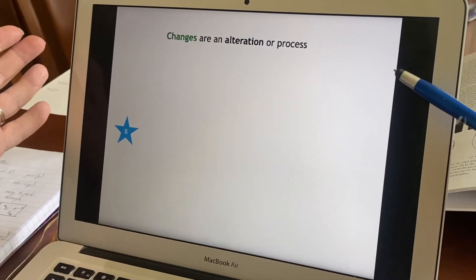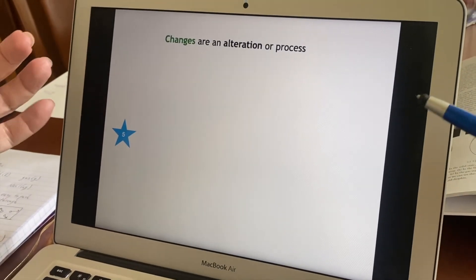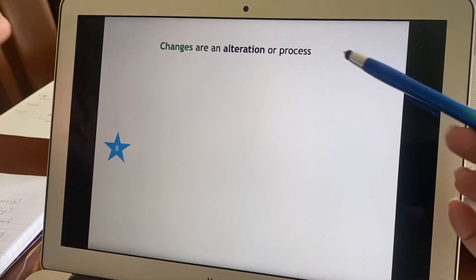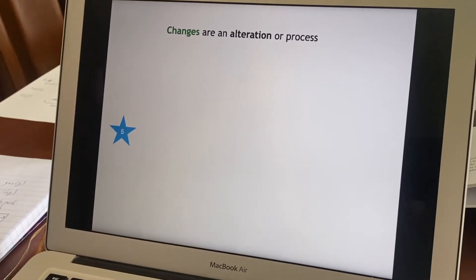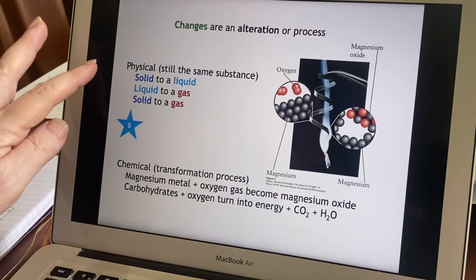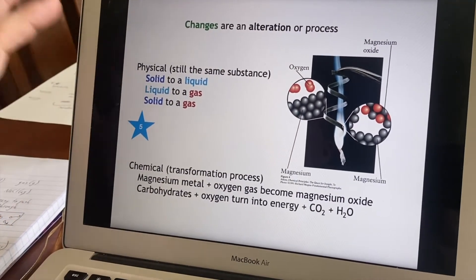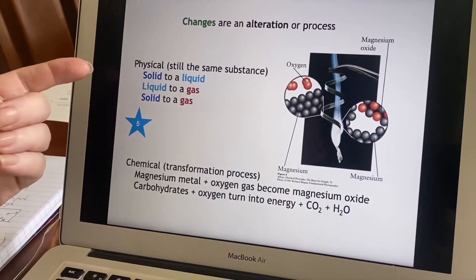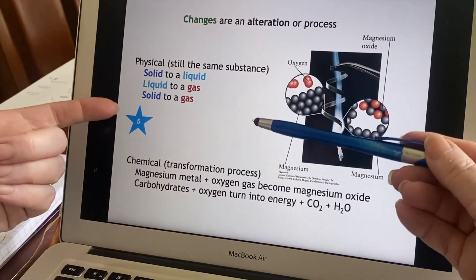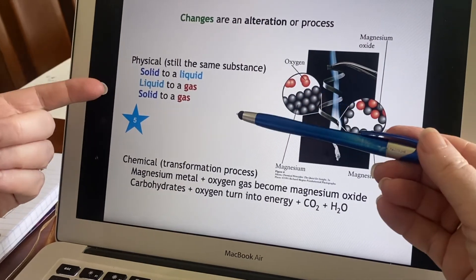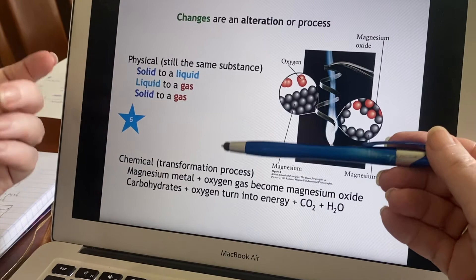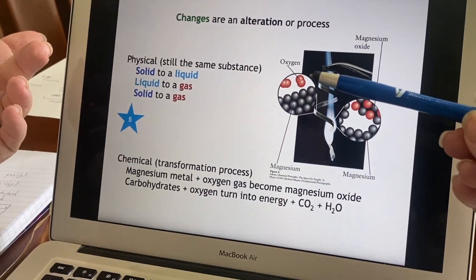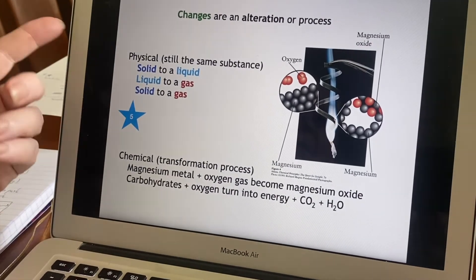We talked about chemical and physical properties. We can also talk about chemical and physical changes because those are actually an alteration or a process. Physical, remember, we're not changing the stuff. So what are physical changes? Well, primarily they are changes in its state. Is it a solid that gets changed to a liquid, a liquid that gets changed to a gas, or sometimes you can change a solid to a gas.